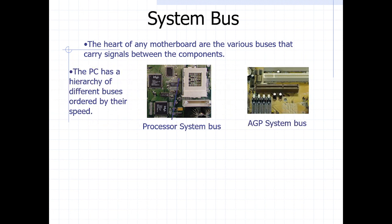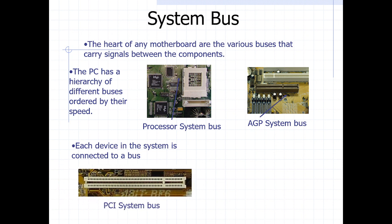From this diagram, the processor system bus is the bus that coordinates all the activities within the processor — between the processor, the main memory, and the input-output devices. The other type of bus we're going to discuss is the AGP — Accelerated Graphics Port System Bus — and of course we have the commonly used system bus known as the PCI.